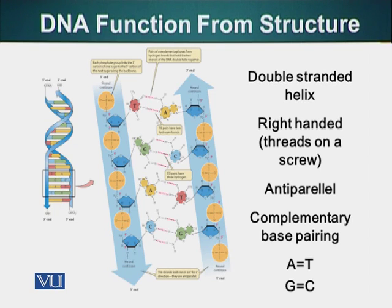The 5 end is called the 5 prime end because it is the position of the carbon atom, and the 3 end of the pentose is the 3 prime end. We have said the DNA is antiparallel. If we repeat the same exercise with the complementary DNA strand, you will see that the direction of this DNA from 5 prime to 3 prime runs in the opposite direction. This is basically what we mean by antiparallel.